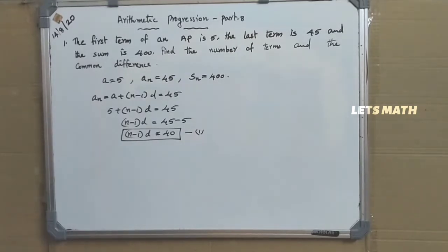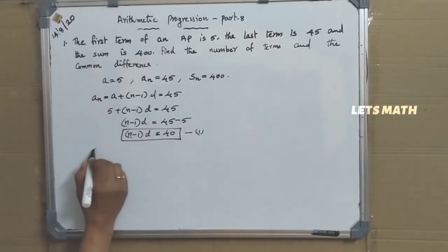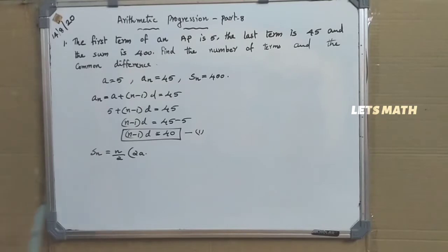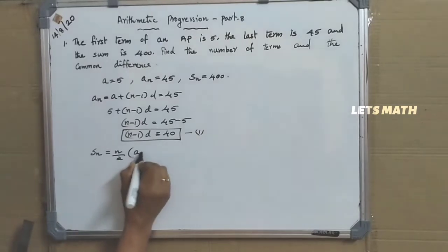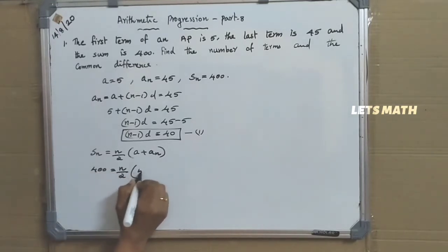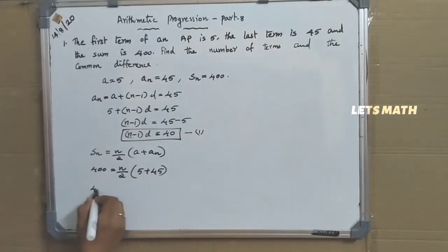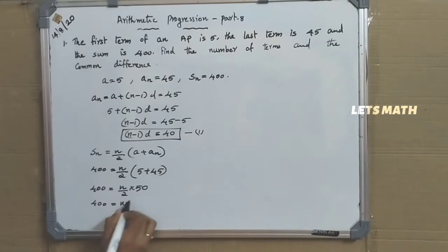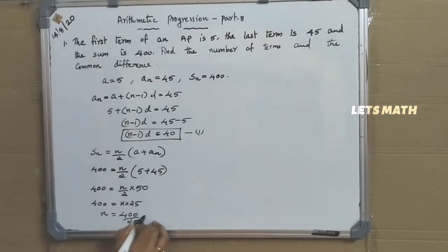Now we take the next formula, that is SN. We know SN equal to N by 2 into 2A plus N minus 1 into D, or we can use the other formula since we know the first term and the last term: SN equals N by 2 into first term plus last term. So SN equals 400, giving 400 equal to N by 2 into 50, which is 25N. So N equal to 400 by 25, that is equal to 16.